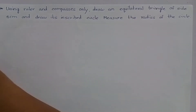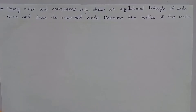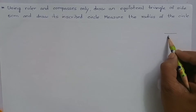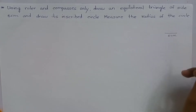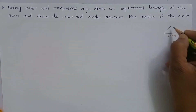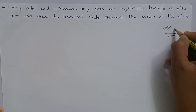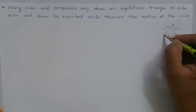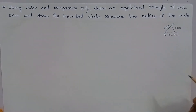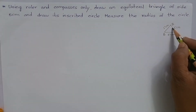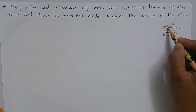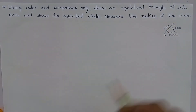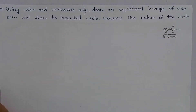We have to construct an equilateral triangle of side 5 cm — equilateral means all the sides are equal to 5 cm. Let me name this triangle as ABC. We also have to draw an inscribed circle, meaning a circle inside the triangle which touches all the sides of the triangle. Let's start the construction.